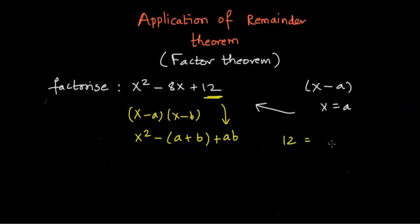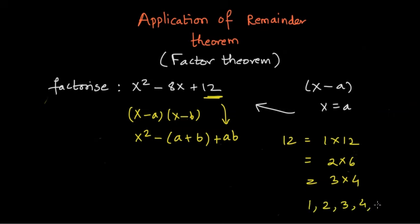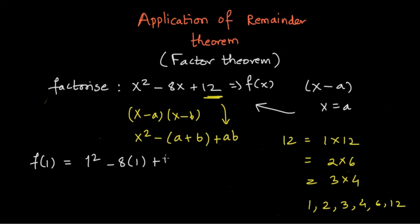So 'a' could be among 1, 2, 3, 4, 6, or 12, which limits our search. We start putting these values in and check whether they return a remainder of 0. Naming the polynomial f(x): f(1) = 1² - 8(1) + 12 = 5, which is not 0, so (x - 1) is not a factor.